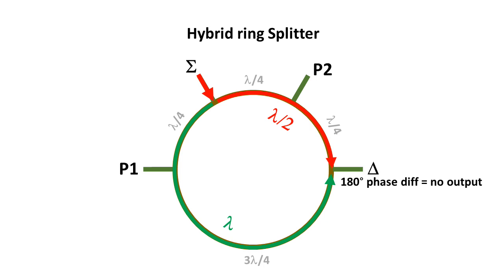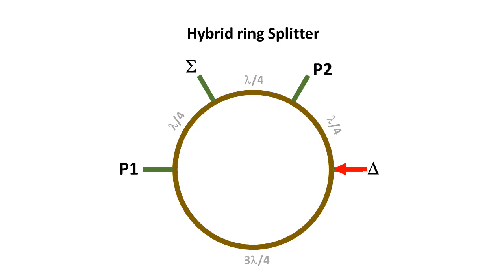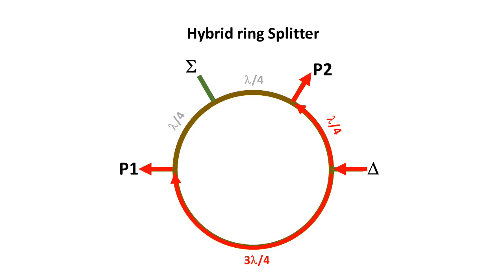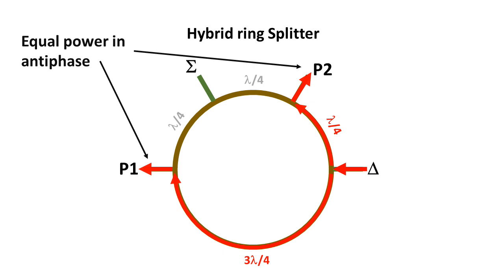Power fed into the difference port (delta) goes via three quarters of a wavelength feeder to output P1 and a quarter wavelength feeder to P2 — these outputs are therefore 180 degrees out of phase. The same consideration applies to the path between the difference and summing inputs, where the signals cancel out. Thus we have the requirements to feed the CSB and SBO signals to the antenna array: CSB signals in phase to the antenna, SBO signals fed out of phase.